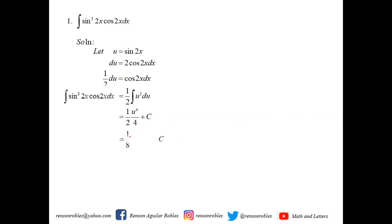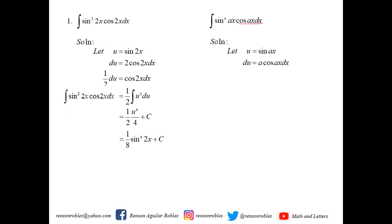Simplifying, we now have 1/8, and writing back in the original variable — u is sine 2x — so we have sine to the 4th of 2x plus c. This whole process can now be generalized using the integral of sine to the n of ax times cosine ax dx, where n and a are real numbers. Applying the same technique, u equals sine ax, and 1/a du equals cosine ax dx, which means the integral transforms to 1/a times the integral of u to the n du.